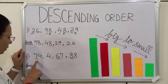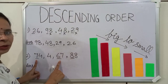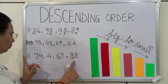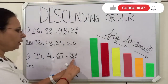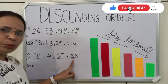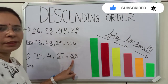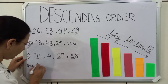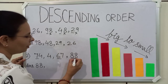First number is 7. Is 7 greater than 6? Yes. Is 7 greater than 8? No. So, we will skip 7. We will take 8. 8 is greater than 6 and 7. It means 88 is the biggest number among these numbers. So, we will write 88. We have written 88, so we will cut it.